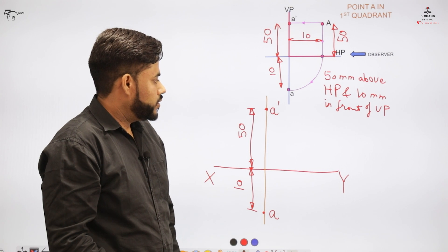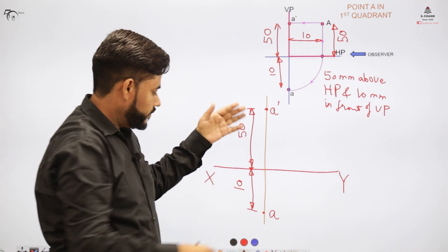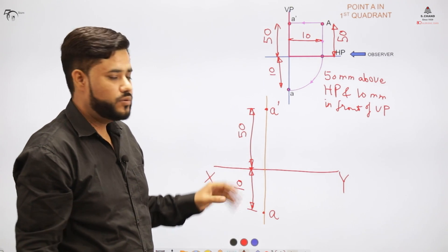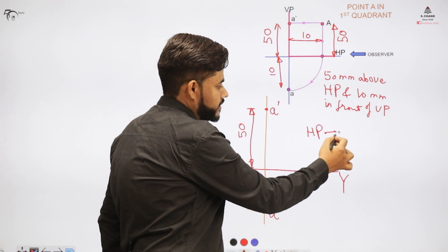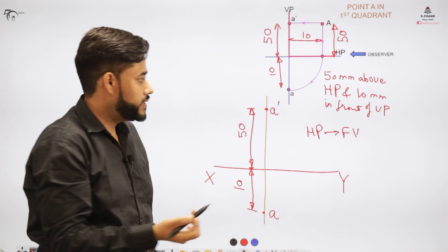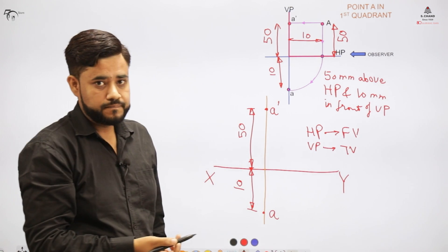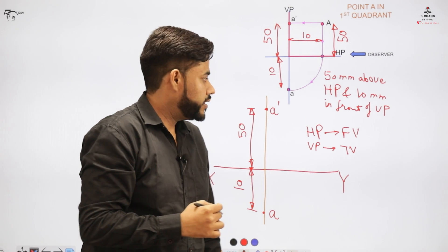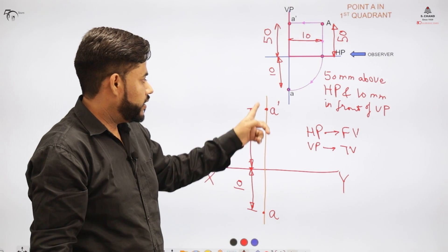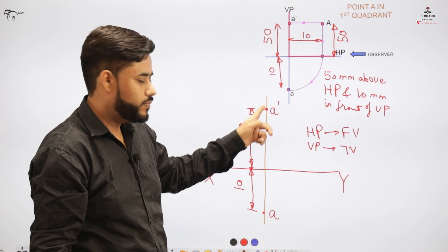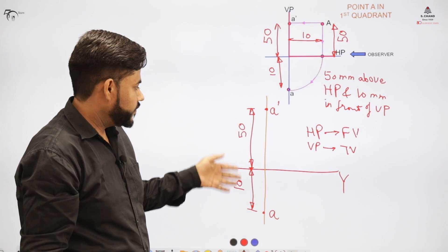Students often ask whether they always need to make the rough diagram first. There is a shortcut: the distance associated with HP is always linked with the front view, and the distance associated with VP is always linked with the top view. So for a first-quadrant object, draw the XY line, draw a projector, place A-dash above the XY line for the front view, and A below for the top view, indicating distances of 50 mm and 10 mm respectively.